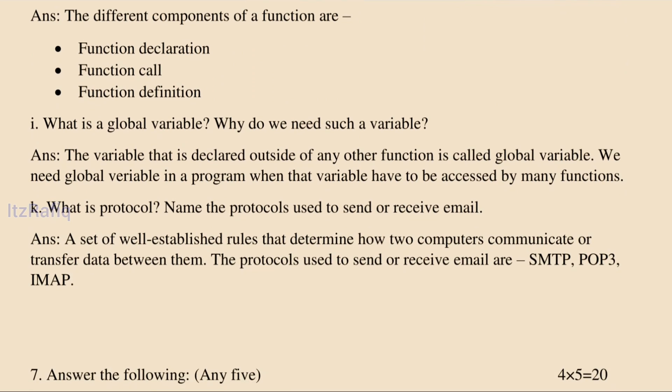What is a global variable? A variable which is declared outside the main function or any other function is known as a global variable. A global variable can be accessed, modified, and read by any other function — this is its advantage. A local variable, which is declared inside a function, can be accessed only by that particular function.